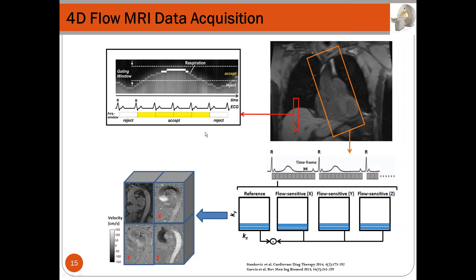To reduce the effects of respiratory motion, we use a respiratory navigator that identifies cardiac cycles where movement is present and rejects them, accepting only regions where movement is minimal. So 4D flow MRI allows full acquisition of velocity information in a full volume within the human body.